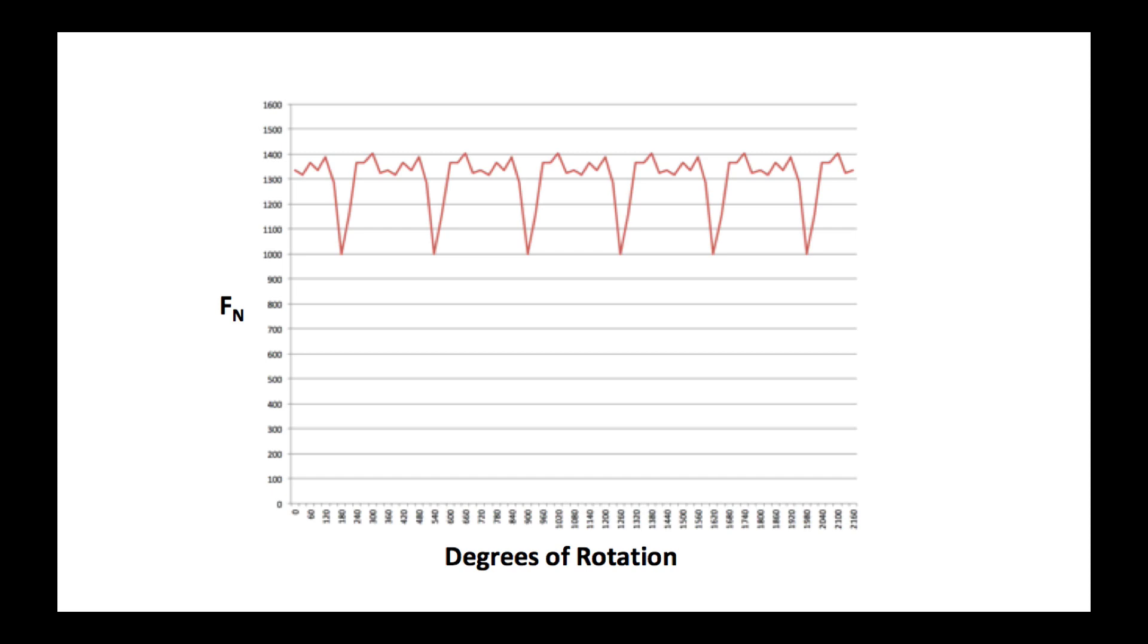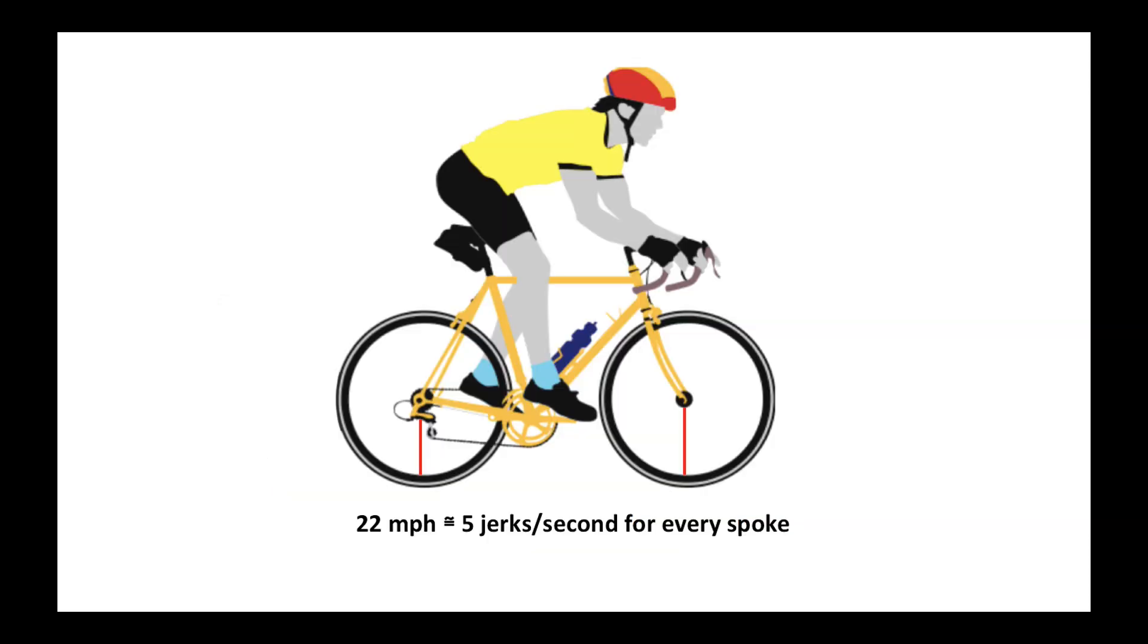In another video we looked at the rhythmic changes of spoke tension, particularly as spokes go through the load bearing zone. That rhythmic yanking of spokes results that at 22 miles an hour, you get five jerks per second for every spoke.